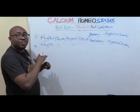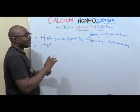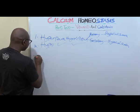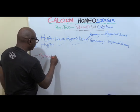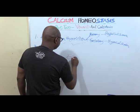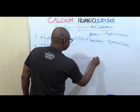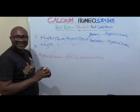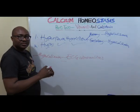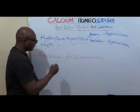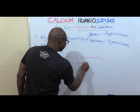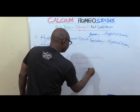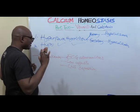In hypercalcemia, there will be ECG abnormalities — in fact, both hyper and hypocalcemia cause ECG abnormalities, because calcium is very important in muscle contraction. In hypercalcemia, you can also have loss of appetite and CNS depression — depression of central nervous system activity.